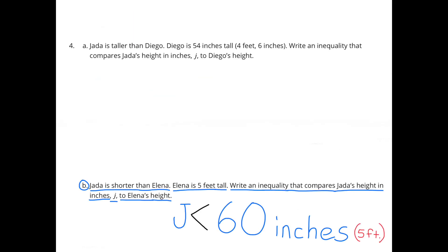Part B: Jada is shorter than Elena. Elena is 5 feet tall. Write an inequality that compares Jada's height in inches, J, to Elena's height. 5 feet is 60 inches, because 5 times 12 is 60. This inequality can be written as J is less than 60.